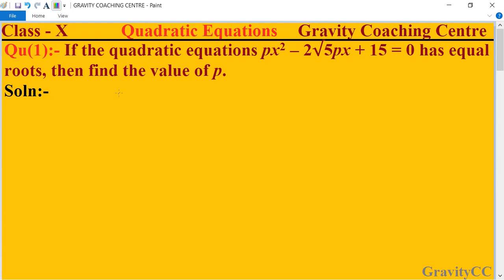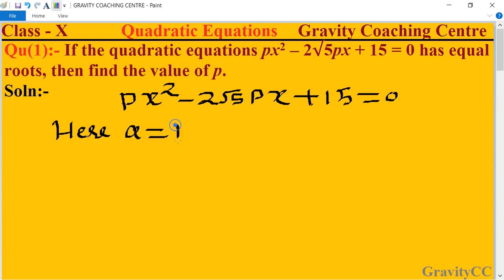Given quadratic equation is px² - 2√5px + 15 = 0. So here a = p, b = -2√5p, and c = 15.